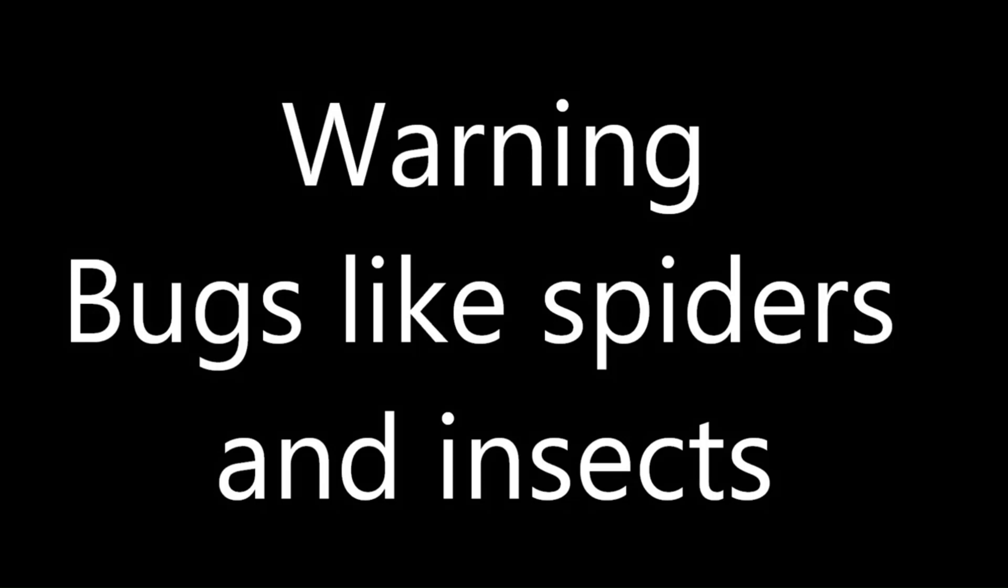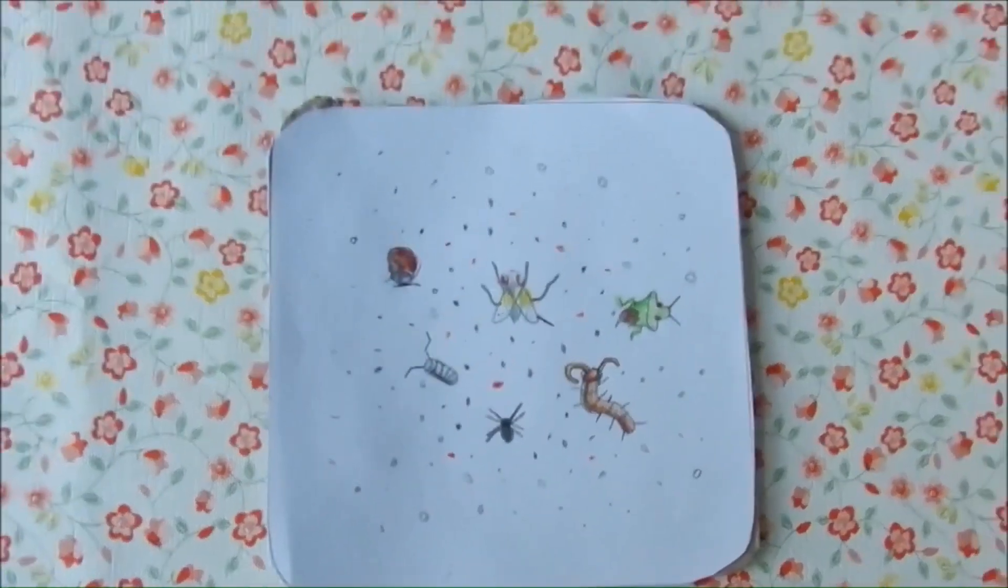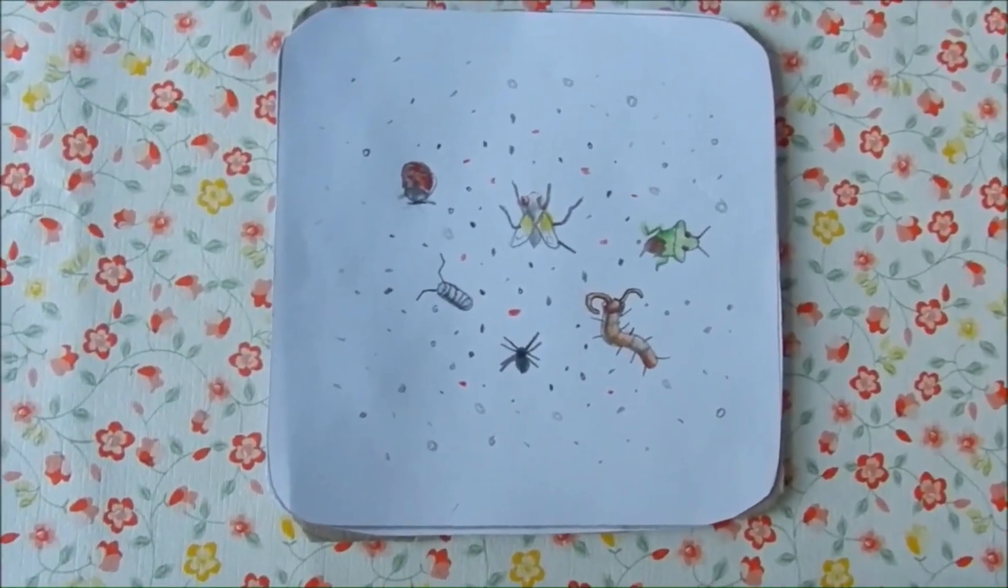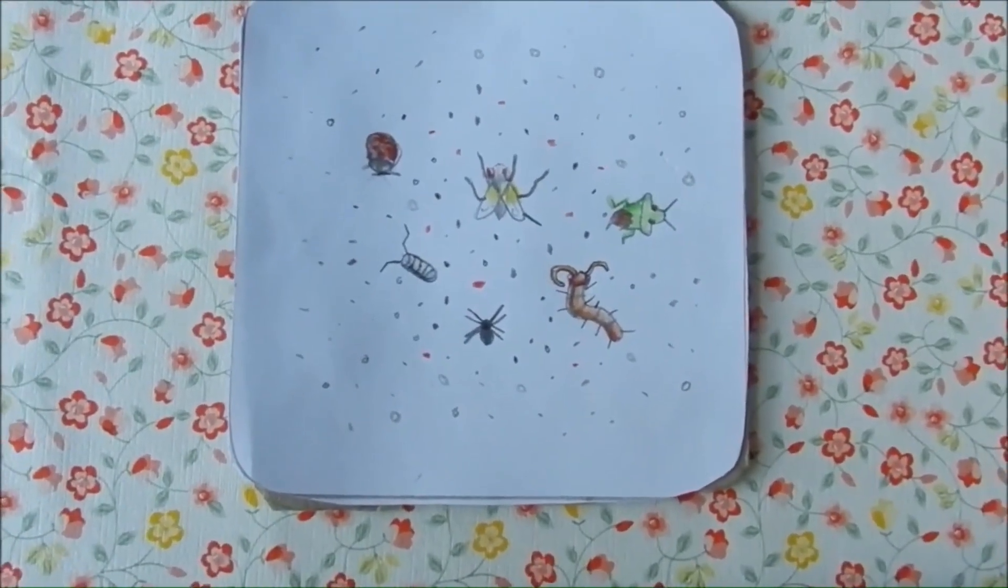With my OCD, I worry about accidentally harming small animals like insects or mites. One of the compulsions for this is when I put two surfaces together, like putting a drink on a coaster.